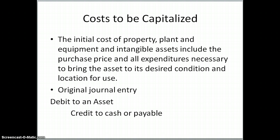So anything we're paying to get the asset from where we bought it to where we're going to use it — any expenditures needed to fix, clean, or paint the asset, anything for installation, test runs, safety checks — all of those would be necessary for desired condition and location for use. Our original journal entry for long-lived revenue-producing assets is a debit to an asset account and either a credit to cash or a payable account, and then we capitalize that cost so we can depreciate it later.